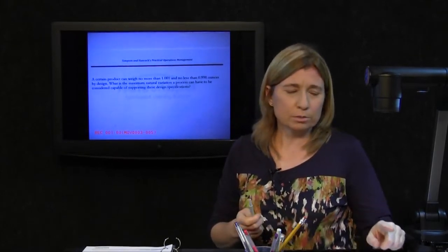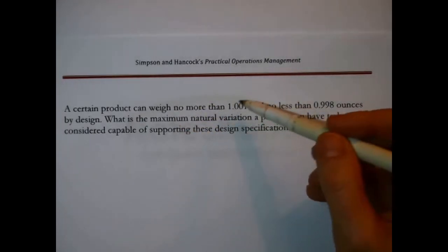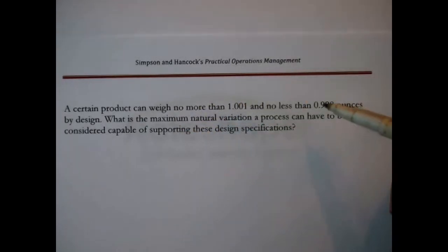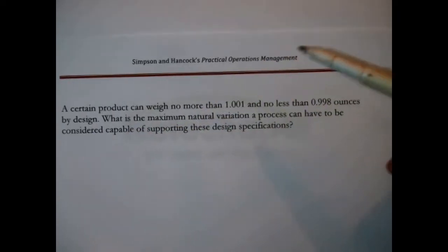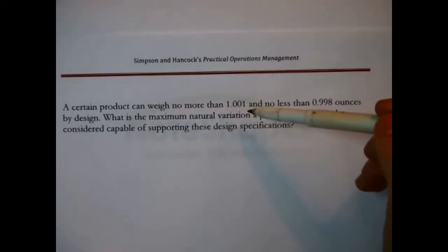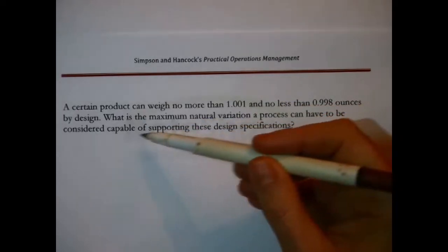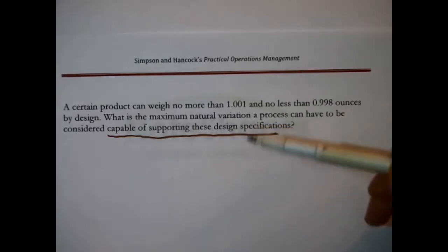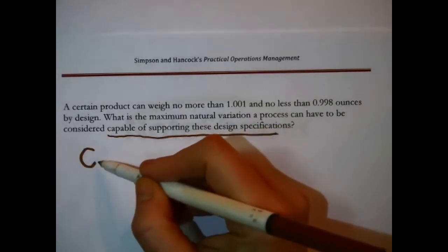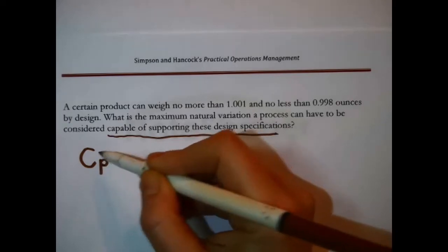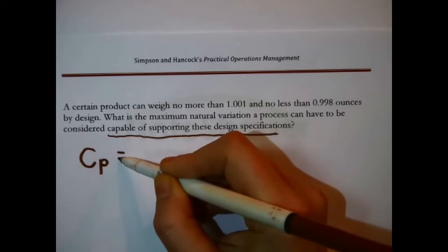Now let's take a look at this problem. A certain product can weigh no more than 1.001 and no less than 0.998 ounces by design. What is the maximum natural variation a process can have to be considered capable of supporting these design specifications? The process capability index, abbreviated capital C sub P, is the score that would tell us that.